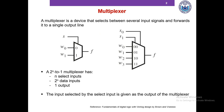A multiplexer is a digital logic circuit element that selects between several input signals and forwards it to a single output line. Here is an example of a 2-to-1 multiplexer on the left. The multiplexer has one select input S, two data inputs W0 and W1, and one output F.